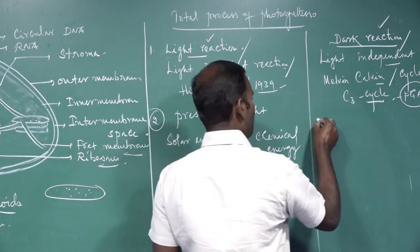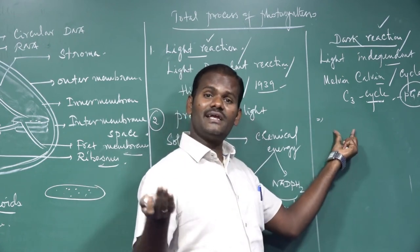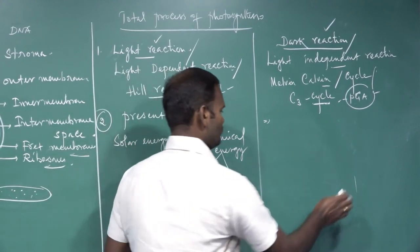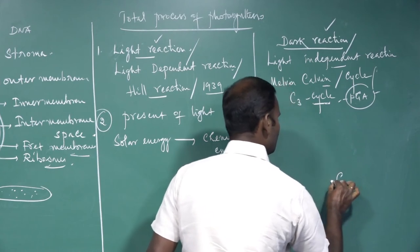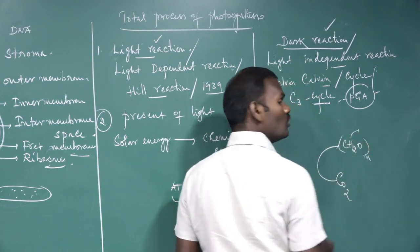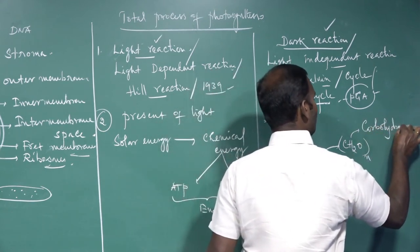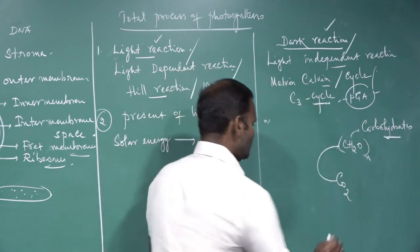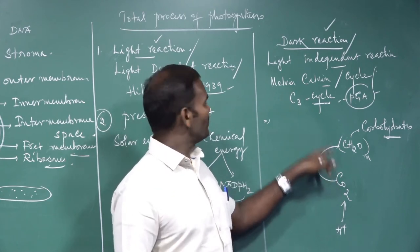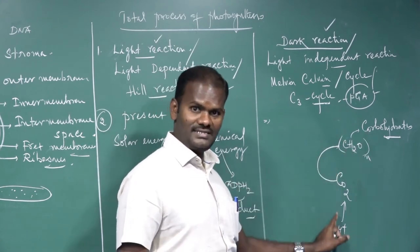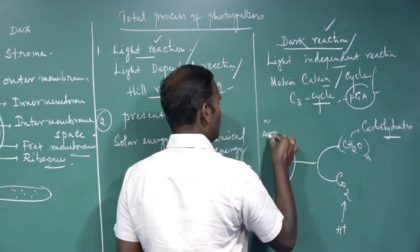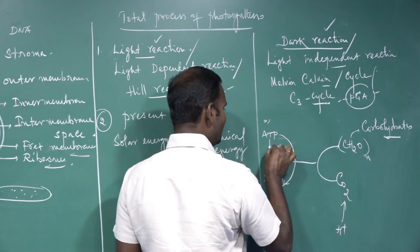In the dark reaction, carbon dioxide is reduced into carbohydrate with the help of ATP and NADPH2, which are generated by the light reactions. Carbon dioxide is reduced into carbohydrate — that is, C6H12O6. Reduction means addition of hydrogen and removal of oxygen. Without light reactions, there are no dark reactions, because dark reactions require ATP and NADPH2 produced by light reactions.